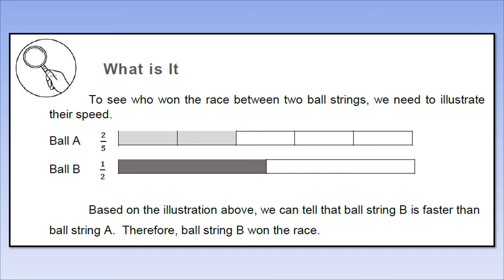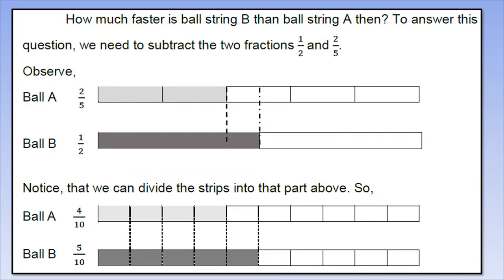Based on the illustration above, we can tell that ball string B is faster than ball string A. Therefore, ball string B won the race. Look at the fraction strip - who is stronger or faster? We can see it's ball B. Therefore, it won the race. Now, how much faster is ball string B than ball string A? To answer this question, we need to subtract the 2 fractions: 1/2 and 2/5.